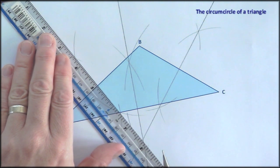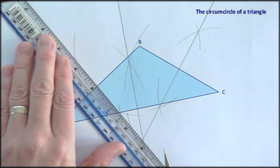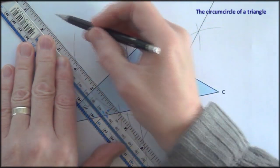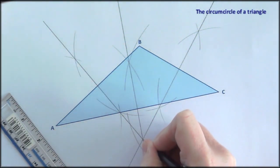Now if I've done a good job, these three perpendicular bisectors ought to intersect at one point. In other words, they're concurrent lines. And that's a bit of a relief.